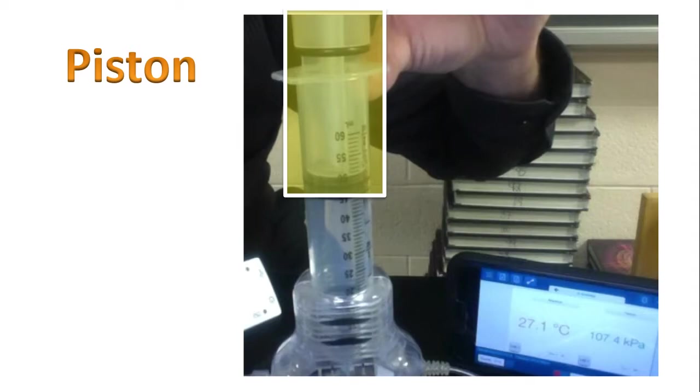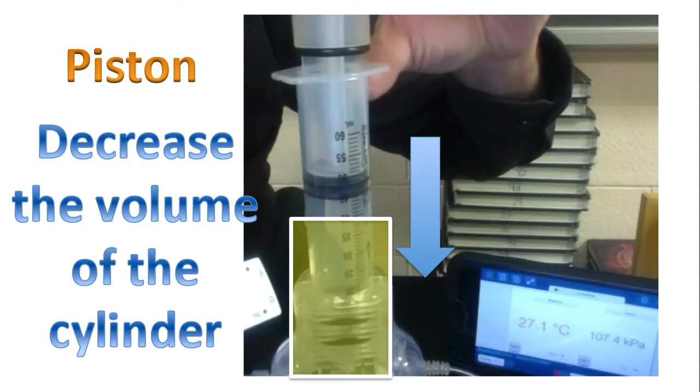Here we have our piston. The piston is able to move up or down. Today's experiment will involve me pushing the piston downwards. By pushing the piston downwards, we'll be decreasing the volume of the cylinder.